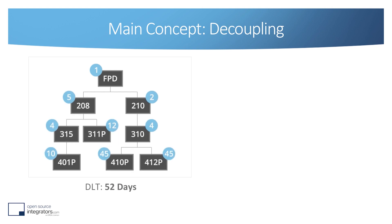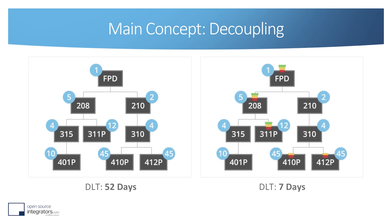Once your buffers are positioned within a network, you can see here the same products before and after buffer positioning. The lead time for the FPD on the left is 52 days because you have to go down the chain of producing 210, 310 and purchasing 410p and 412p, which has a purchase lead time of 45 days. By putting some buffers within that chain, you reduce your decoupled lead time to 7 days, because the buffer will allow you to always have 410p and 412p available in stock. So within 7 days — within the production of 310p, 210p and FPD — you can serve your buffer on FPD and serve your customer.